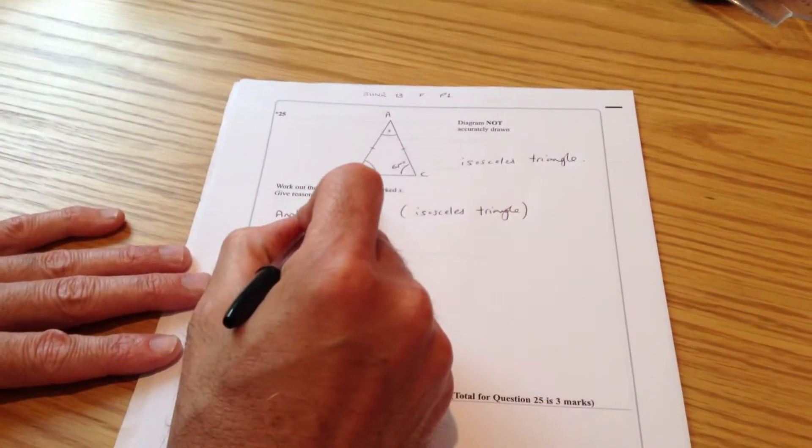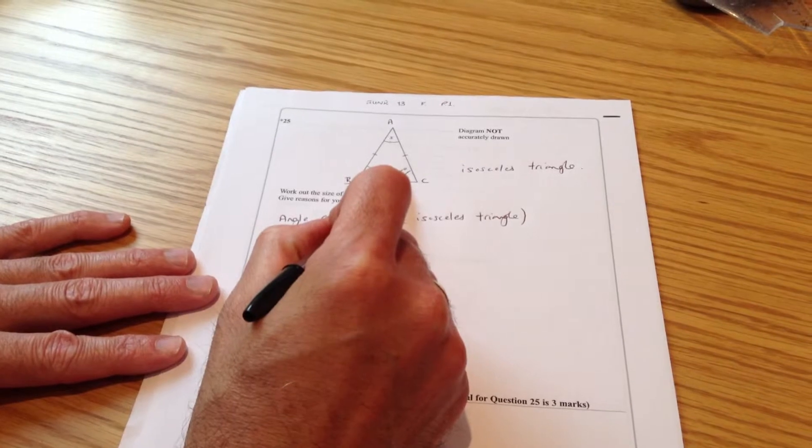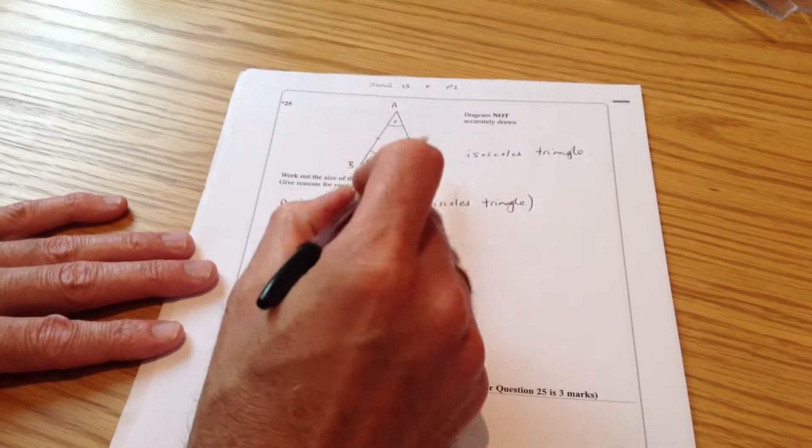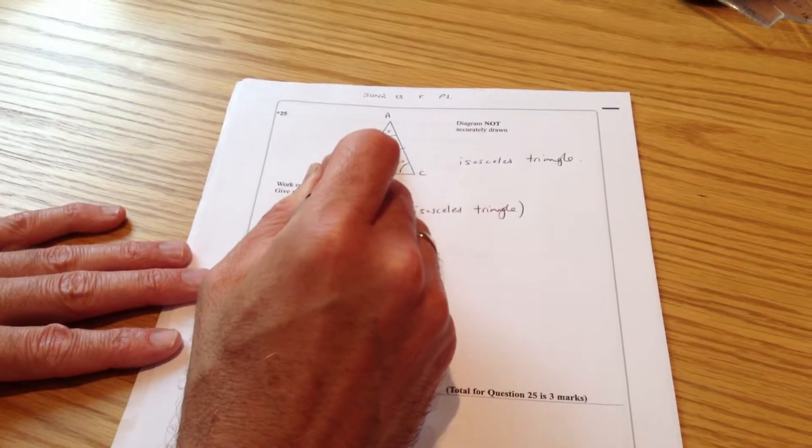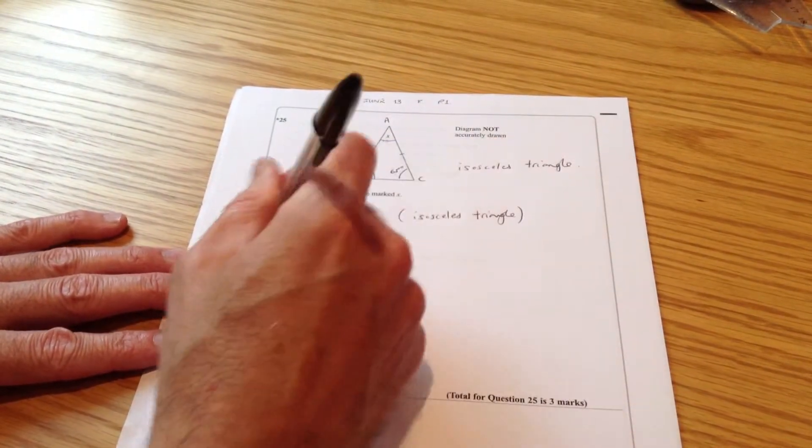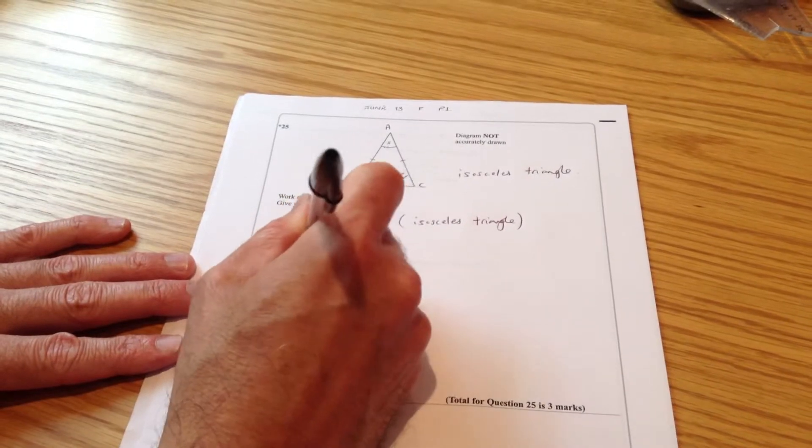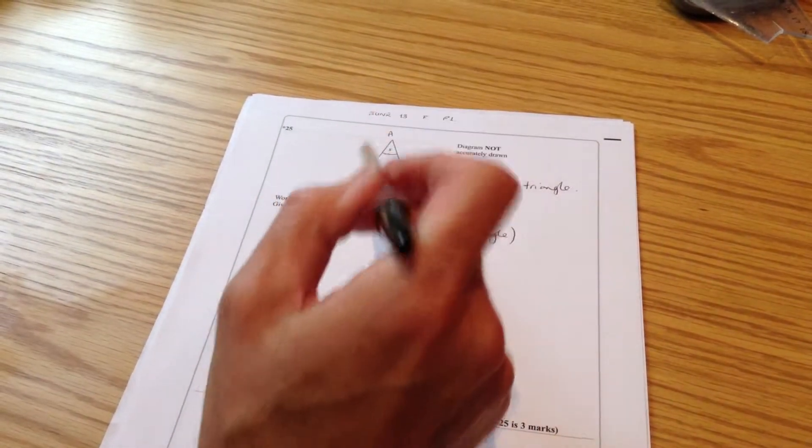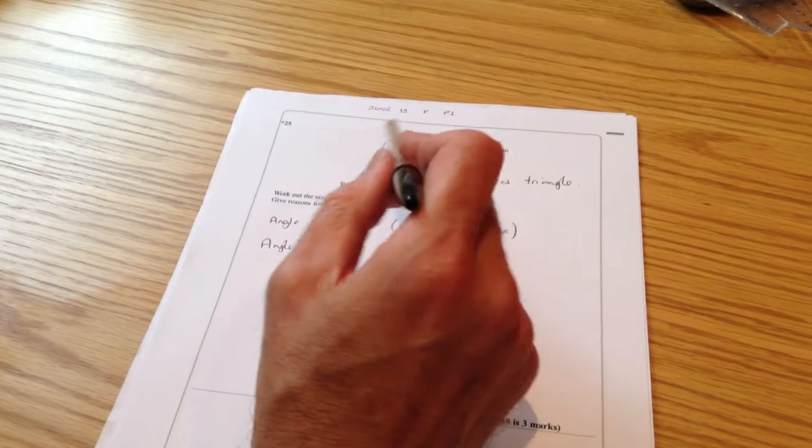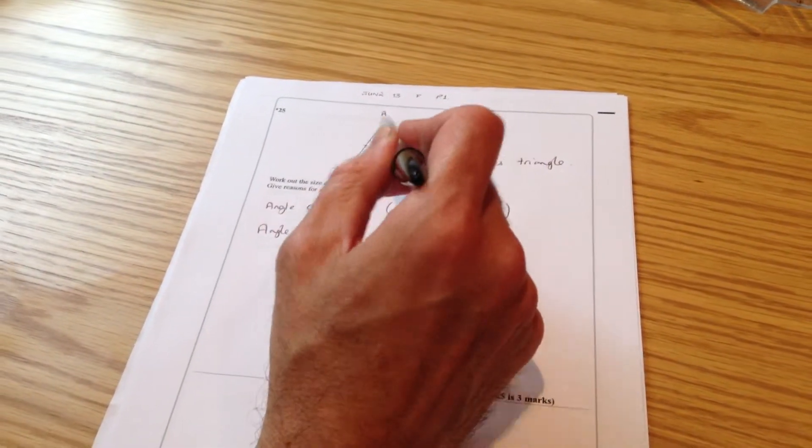Now if I know that's 65 degrees and that's 65 degrees, then obviously I should be able to work out the third angle, which is the one at the top. So angle A is the one I'm going to work on now, and the thing that's going to come to mind now is the fact that all three angles in the triangle make up to 180 degrees.